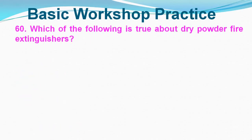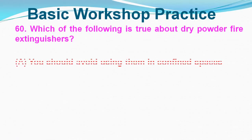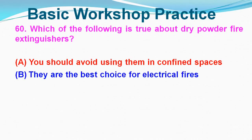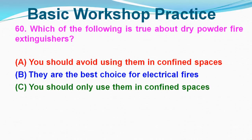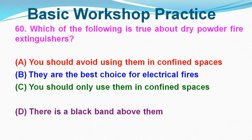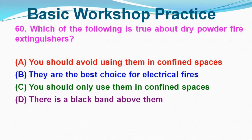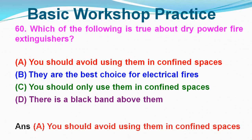Question No. 60: Which of the following is true about dry powder fire extinguishers? Option A: You should avoid using them in confined space, Option B: They are the best choice for electrical fires, Option C: You should only use them in confined space, Option D: There is a black band above them. Correct answer is Option A, You should avoid using them in confined space.